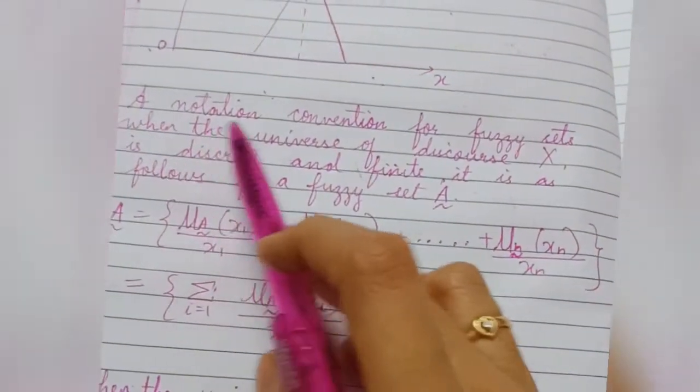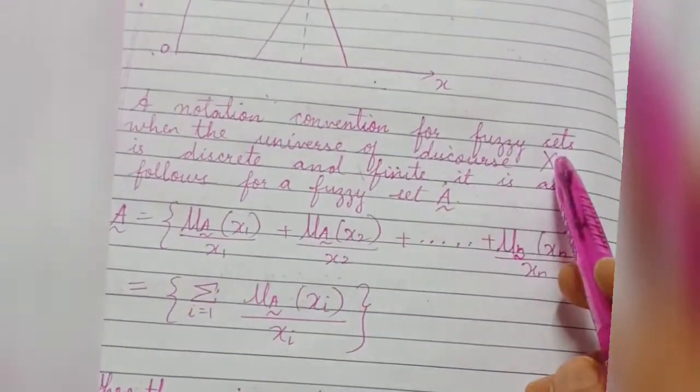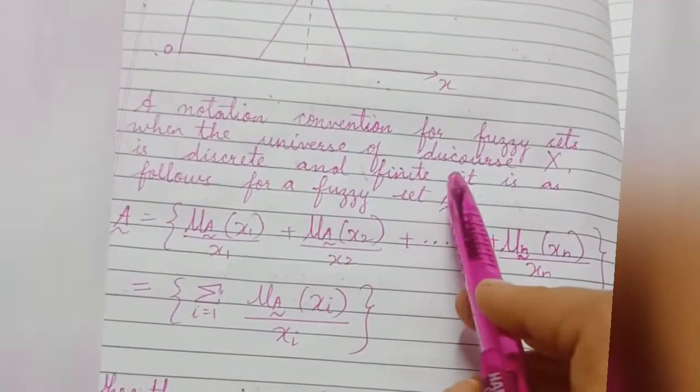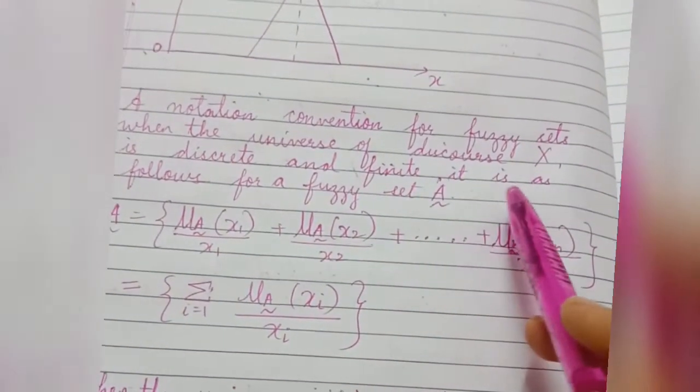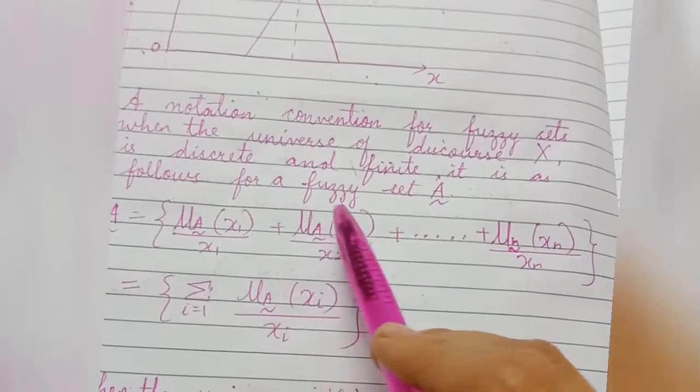Next is a notation convention for fuzzy sets when the universe of discourse X is discrete and finite. It is as follows for a fuzzy set A.